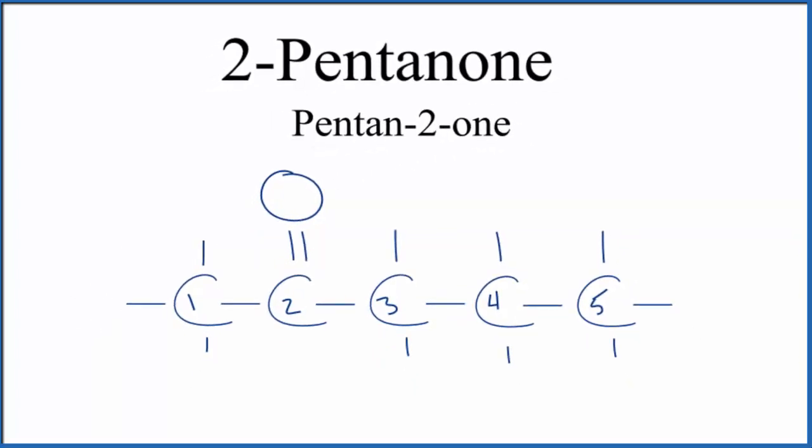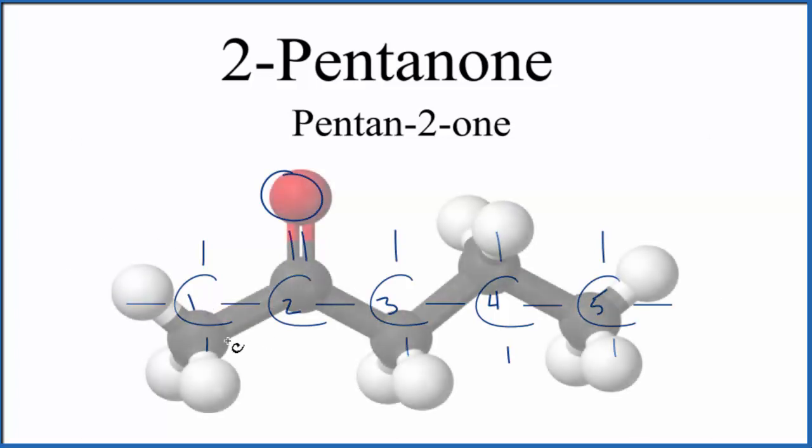Let's look at this in three dimensions. So we have our carbon one, two, three, four, five, that's the pent. And on the second carbon, we have our double bonded oxygen and that double bonded oxygen has carbon atoms on either side. So it is a ketone.